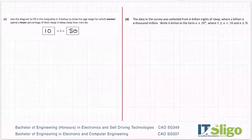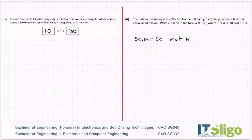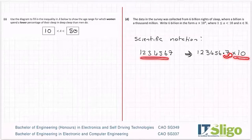Part D: The data was collected from 6 billion nights of sleep, where a billion is a thousand million. Write 6 billion in the form a × 10^n, where 1 ≤ a ≤ 10. This is scientific notation — it comes up quite often and is just a way of writing big numbers.